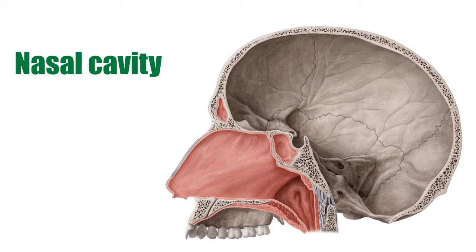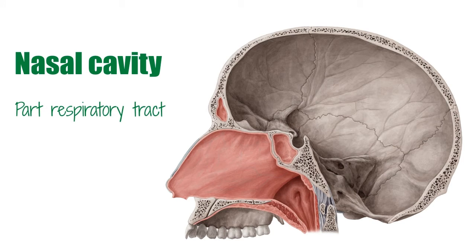The nasal cavity is actually made up of two nasal cavities that are separated by the nasal septum. We can see the nasal septum here. The nasal cavities are the most superior part of the respiratory tract and they're located above and behind the nose. They are elongated wedge-shaped spaces and their base is wide and their apex narrow. The cavities are created by a skeletal framework composed of bone and cartilage.